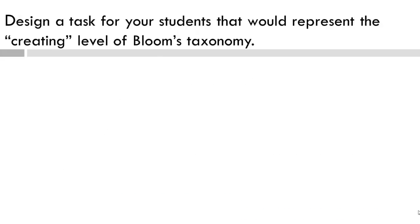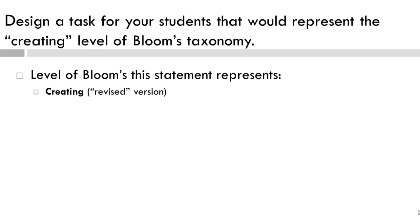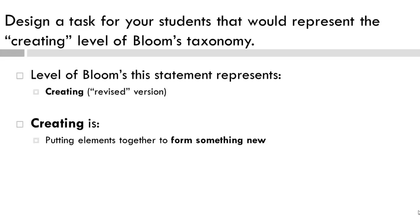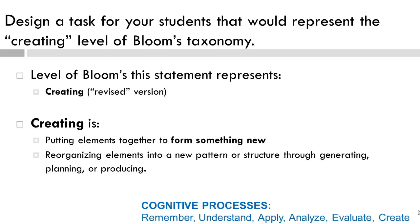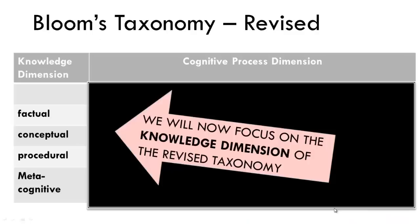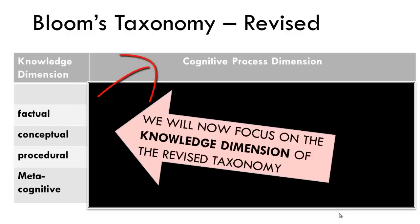If asked to design a task that represents the creating level of cognitive processes, this would represent creating, because you would need to pull together the elements of what you have learned to make something new. Now let's look at the knowledge dimension — a new addition to the revised taxonomy. This refers to the kind of knowledge to be learned. The revised work considers both the kind of knowledge and the cognitive processes used to learn.